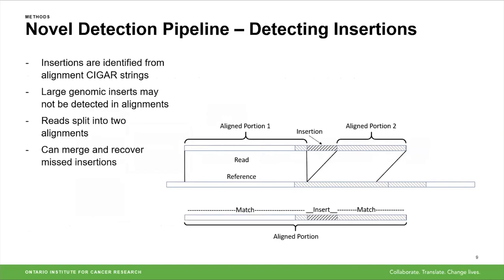Large genomic inserts might not always be detected in the alignments. A read with an insertion may not have a single alignment record — it's been split into two: one for the sequence upstream of the insert and one downstream. The two alignment portions are adjacent on the reference, but there's a gap on the read where the insert sequence actually is. We can take these two aligned segments and combine them to recover the missed insertion, extracting the sequence the same way as before.